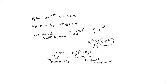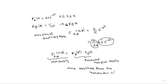Product of marginal densities. Therefore, amplitude and phase are independent random variables.